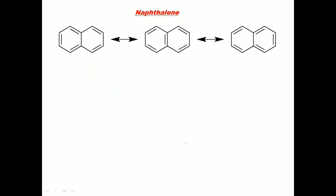Coming to naphthalene, it has three resonant structures. All these three resonant structures are not equal. This molecule has two types of carbon-carbon bonds. Among these three resonant structures, certain bonds are labeled X — these six bonds are all equal. And other bonds are labeled Y — those four bonds are also equal.